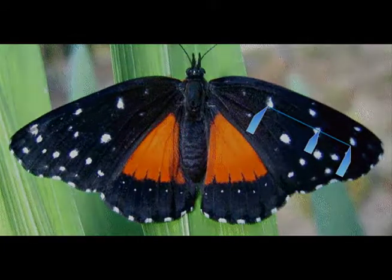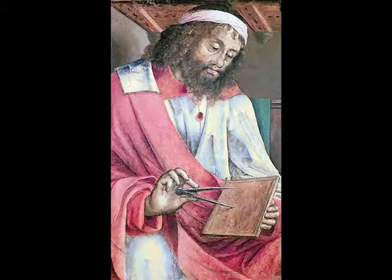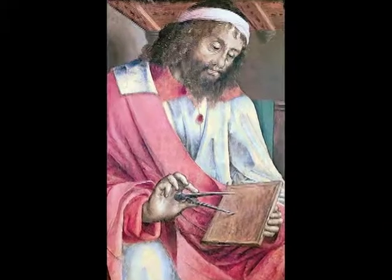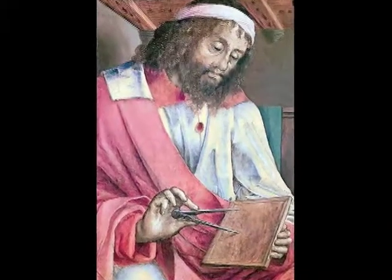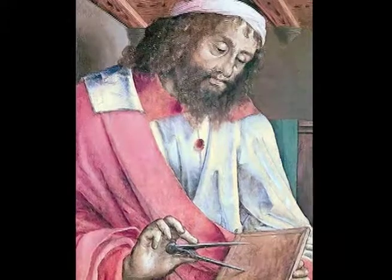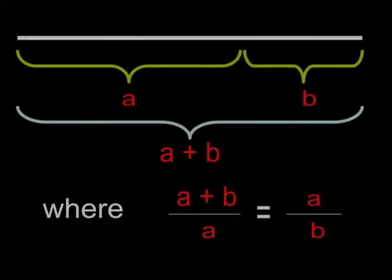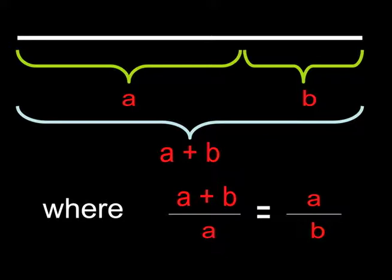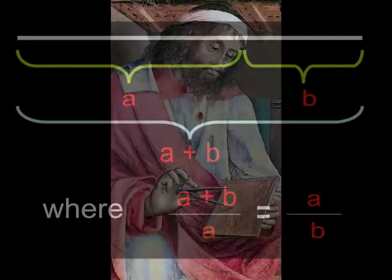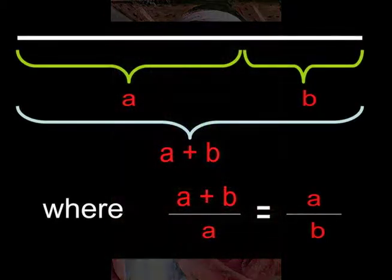It was first defined in 300 BCE when Euclid provided the first geometric definition of what would later be called the Golden Ratio. It was derived from the simple division of a line into its extreme and mean ratio, meaning in Euclid's words that as the whole is to the greater segment, so is the greater to the lesser.